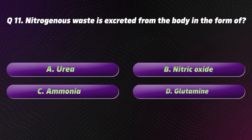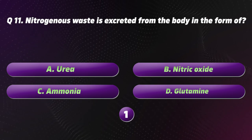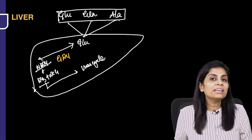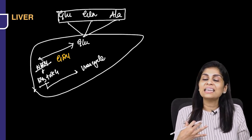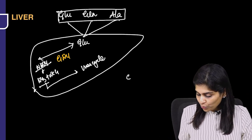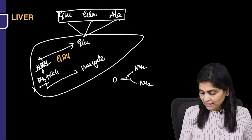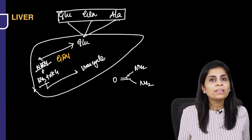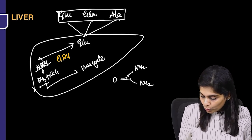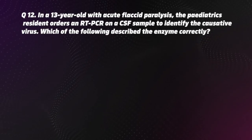Question 11. Nitrogenous waste is excreted from the body in the form of: A. Urea, B. Nitric oxide, C. Ammonia, D. Glutamine. The correct option is A, Urea. The urea cycle converts ammonia to urea, which is excreted in urine. The formula for urea is C=O(NH₂)₂. Both N1 and N2 of urea are derived from ammonia, making it the best non-toxic form for ammonia excretion.